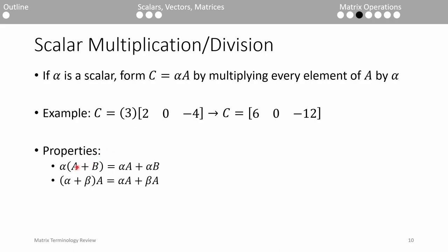When we have two operands, A and B, we can distribute the scalar alpha to each of the operands. If we have two scalars, alpha and beta, and one matrix or vector A, we can distribute both scalars.